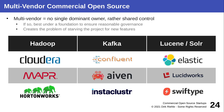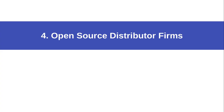Over time, these multi-vendor situations tend to consolidate. For Hadoop, there's mainly Cloudera left. For Kafka, there is Confluent. For Lucene/Solr, there's Elasticsearch. Lucidworks and SwiftType are largely gone or acquired by Elastic. In general it tends toward a single vendor, not multiple.